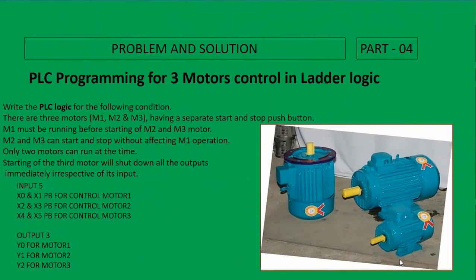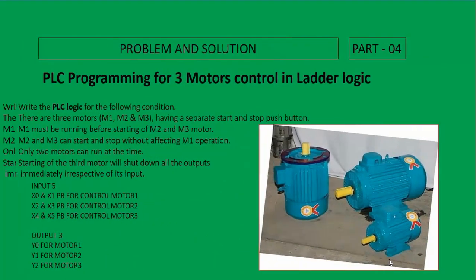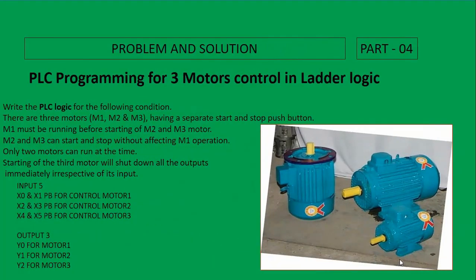Welcome to my regular series Problem and Solution, Part 4. Today we shall make a PLC program for 3-motor control in ladder logic. The following conditions apply: there are three motors M1, M2, M3, each having a separate start and stop push button, meaning all motors are controlled by separate on-off switches.